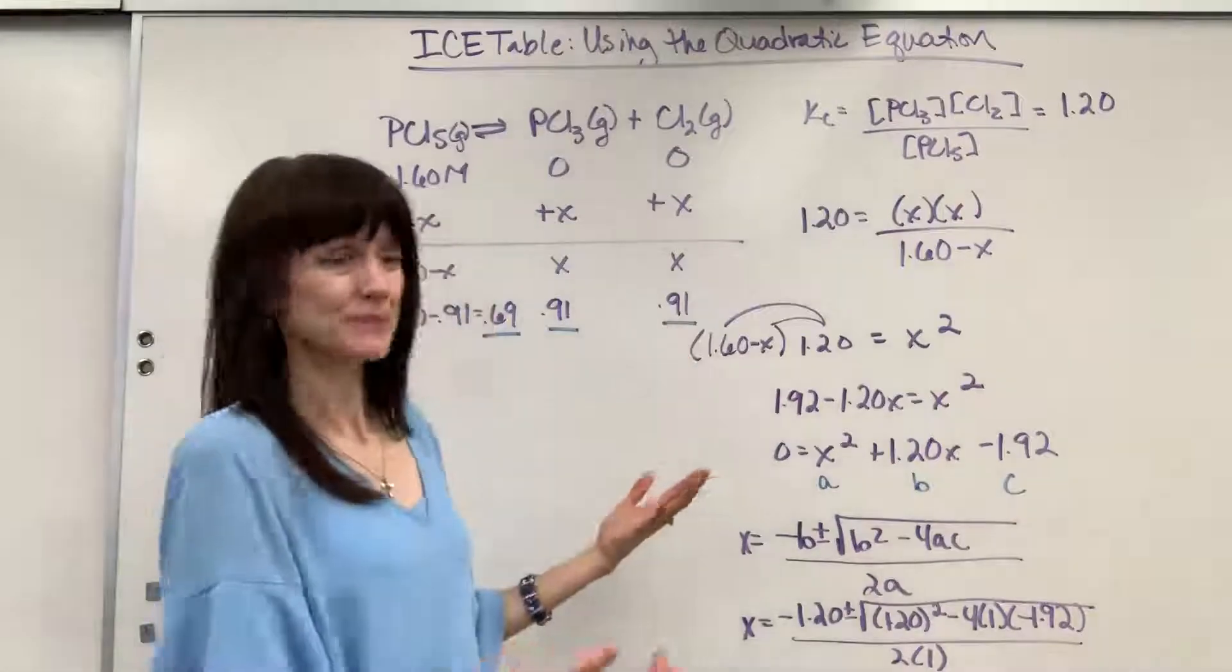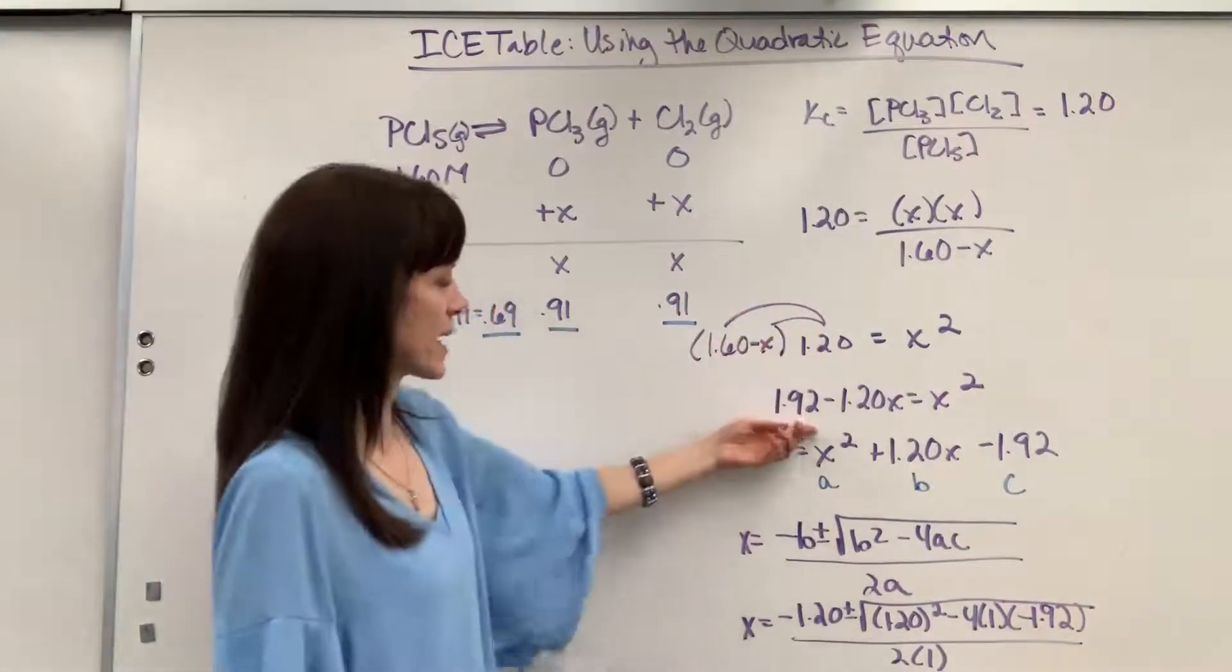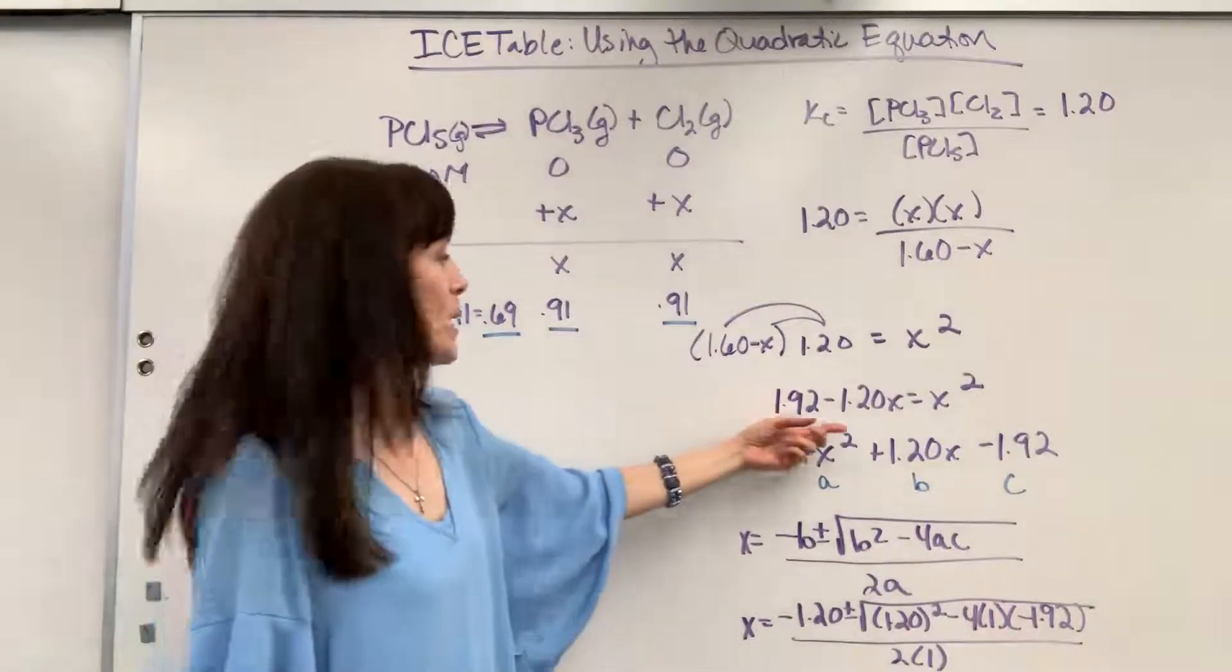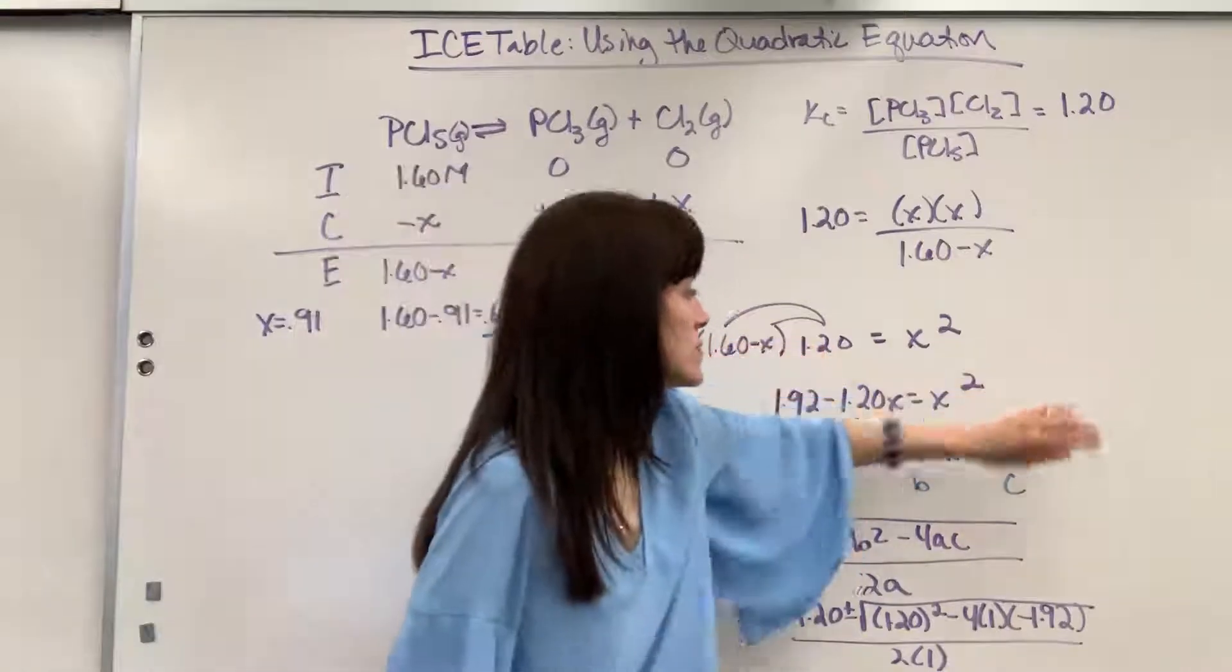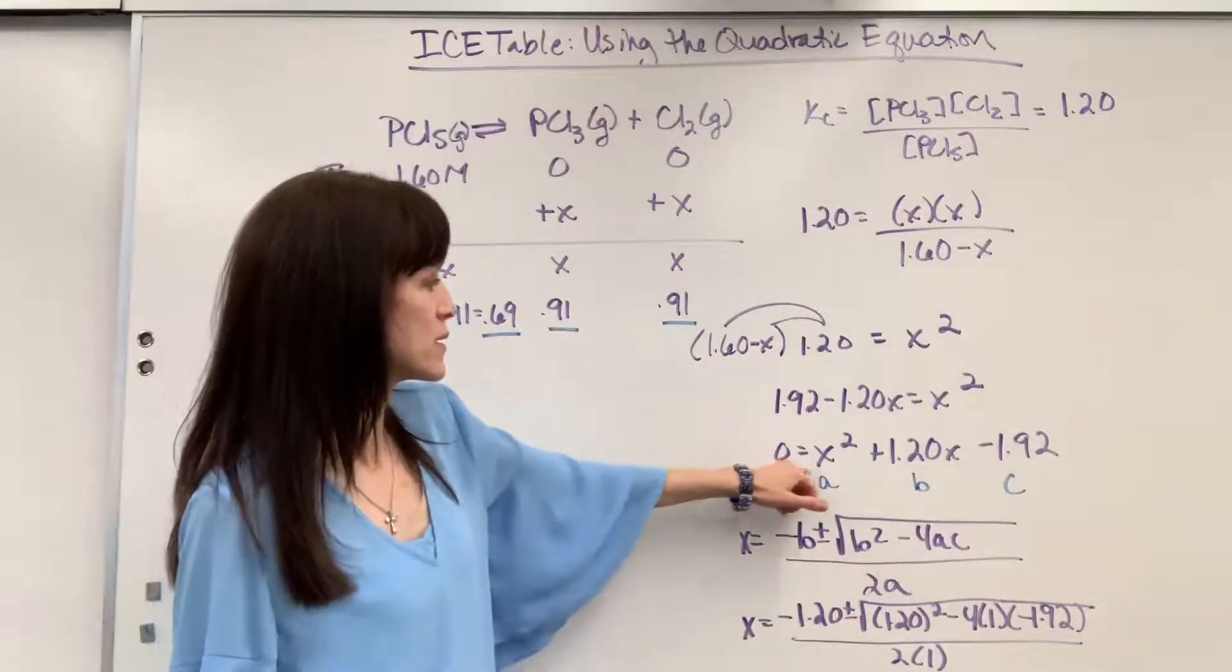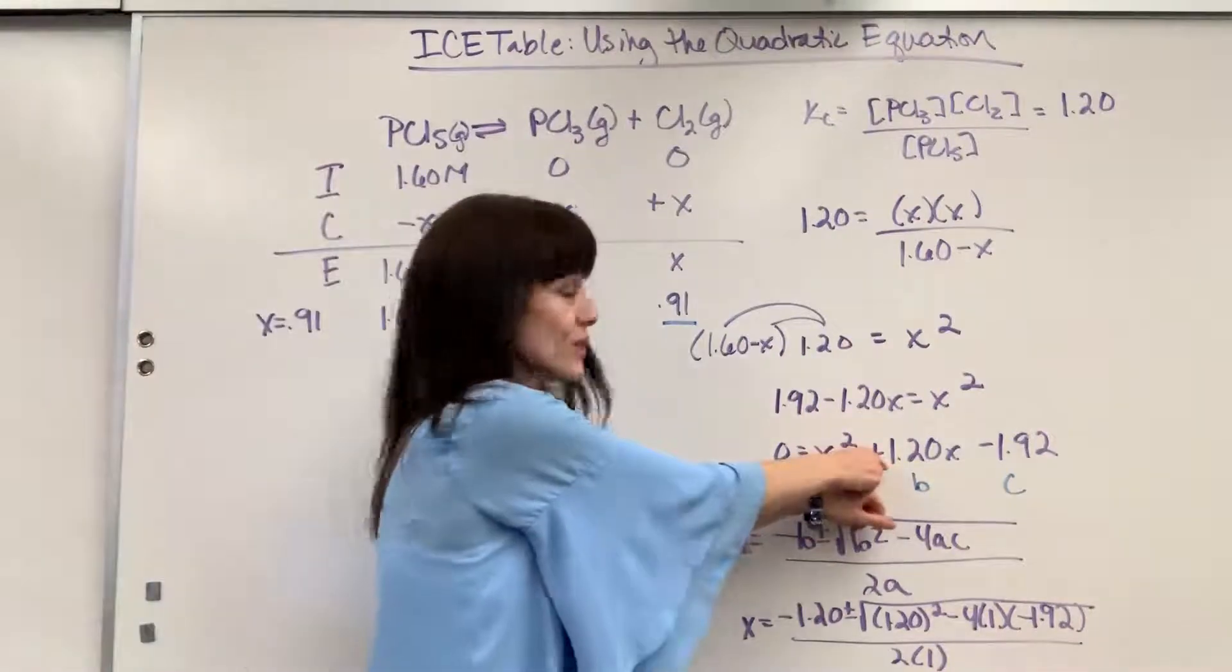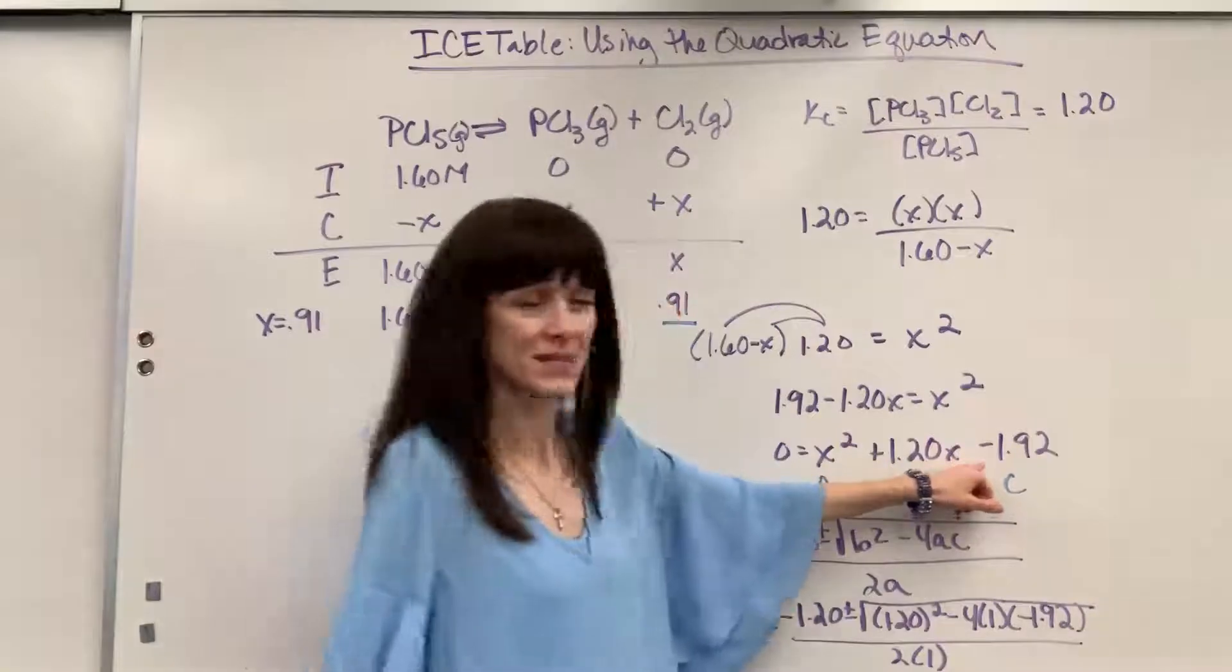So we have to distribute. I multiply that 1.2 by the 1.6 and the X, and I got this. 1.92 minus 1.20X equals X squared. Then I subtracted those over, just brought them to the other side. And 0 equals X squared plus the 1.20X, because I added that over. And then here I subtracted that one over, minus the 1.92.